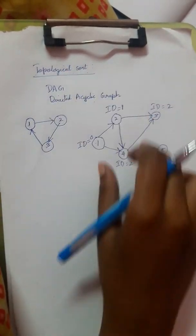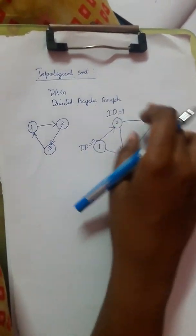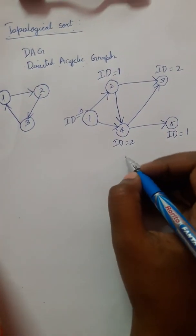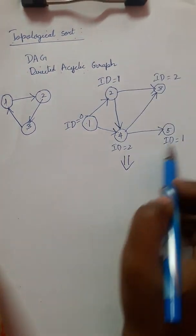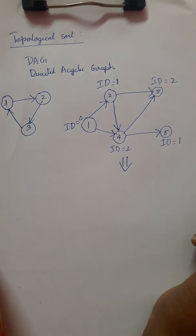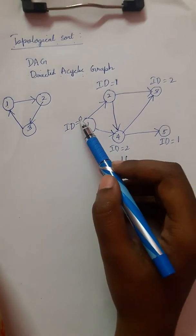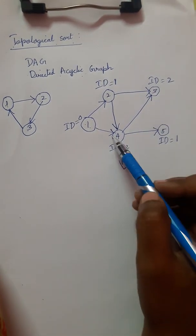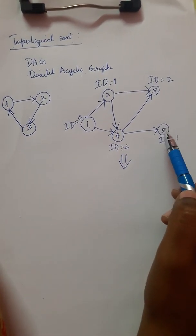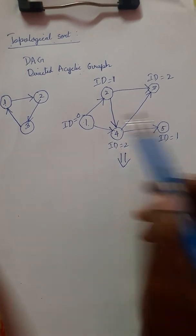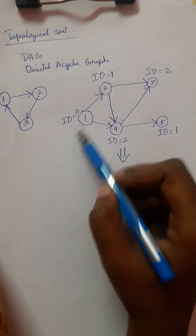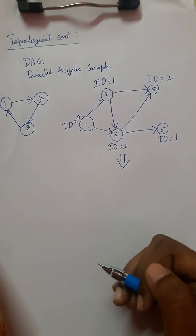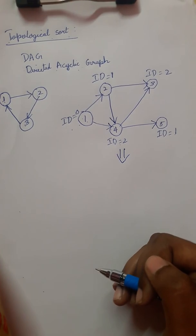For calculating topological sort, first we calculate the in-degrees for all elements. Node 1 has in-degree 0, node 2 has 1, node 3 has 2, node 4 has 2, node 5 has 1. Node 1 has the least in-degree, so we eliminate node 1 first.